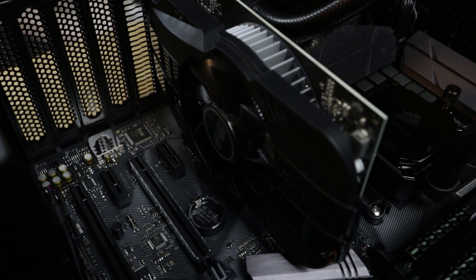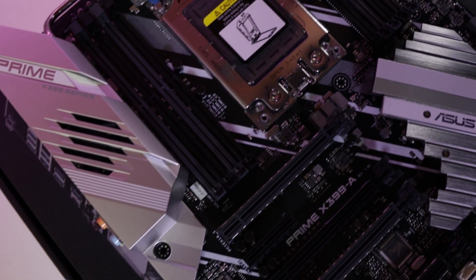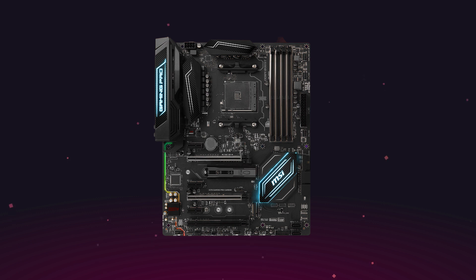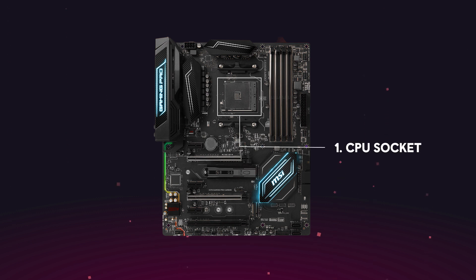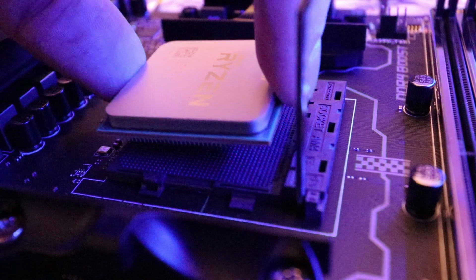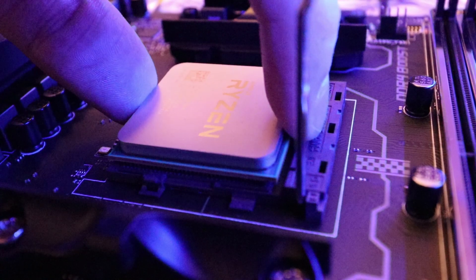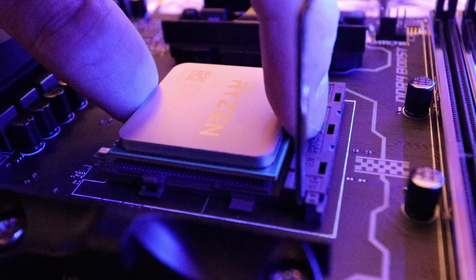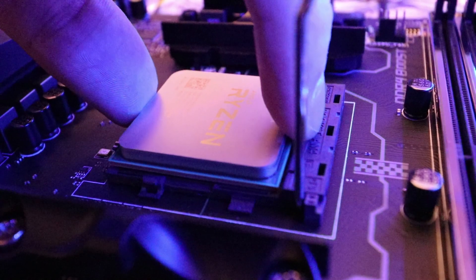Looking at a motherboard itself can be a bit overwhelming — it looks a little bit complicated — so let's break down all the different key components of the motherboard itself. Starting off with the CPU socket, which is where the CPU is housed. One of the most important elements is to make sure that the socket of the CPU and the socket of the motherboard are the same, or they won't be compatible with each other.